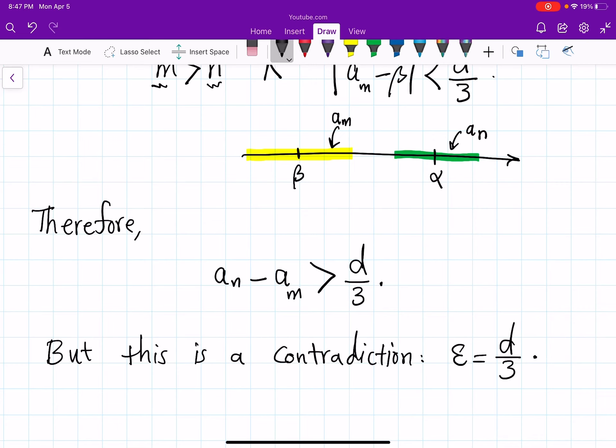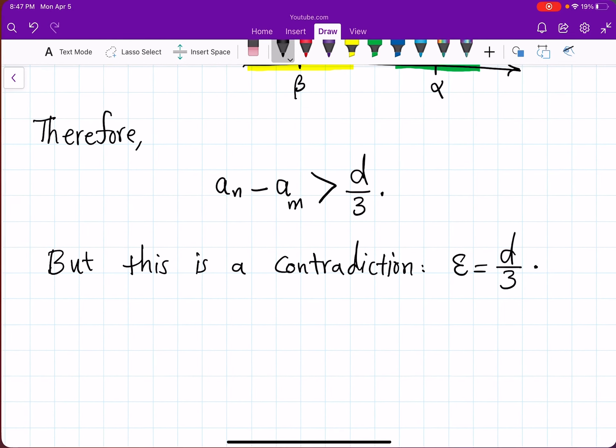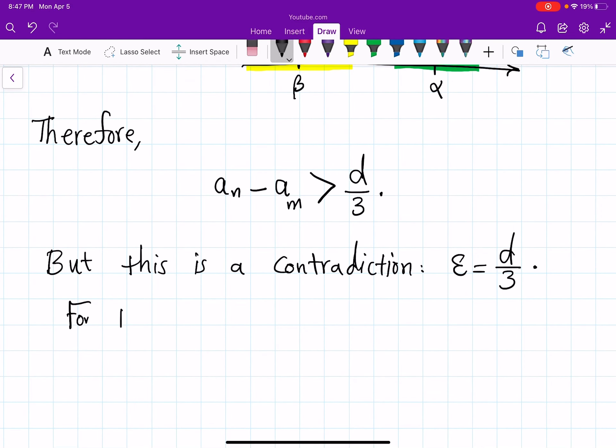so let's for the completeness just emphasize here for this epsilon which is positive there would be no N satisfying the condition of the sequence